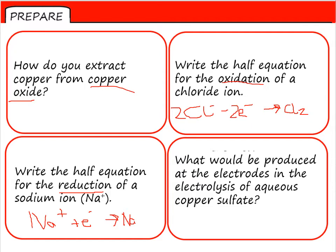What would be produced at the electrodes in the electrolysis of aqueous copper sulfate? Now, copper sulfate contains two ions: copper Cu2+, and the sulfate ion, SO4 2-. It's a good idea to remember that sulfate ion, to learn that off by heart.